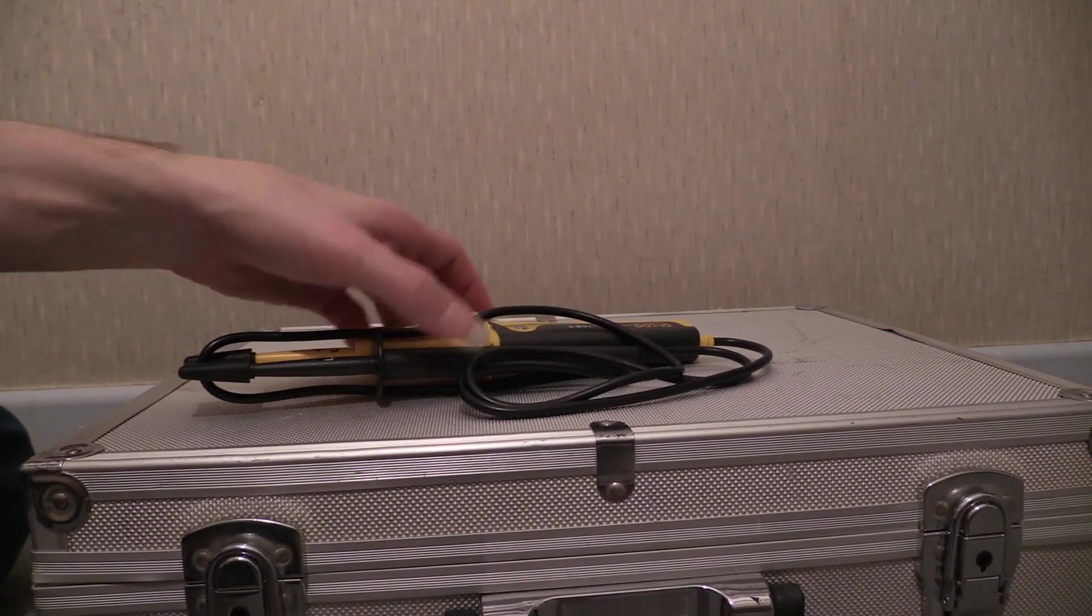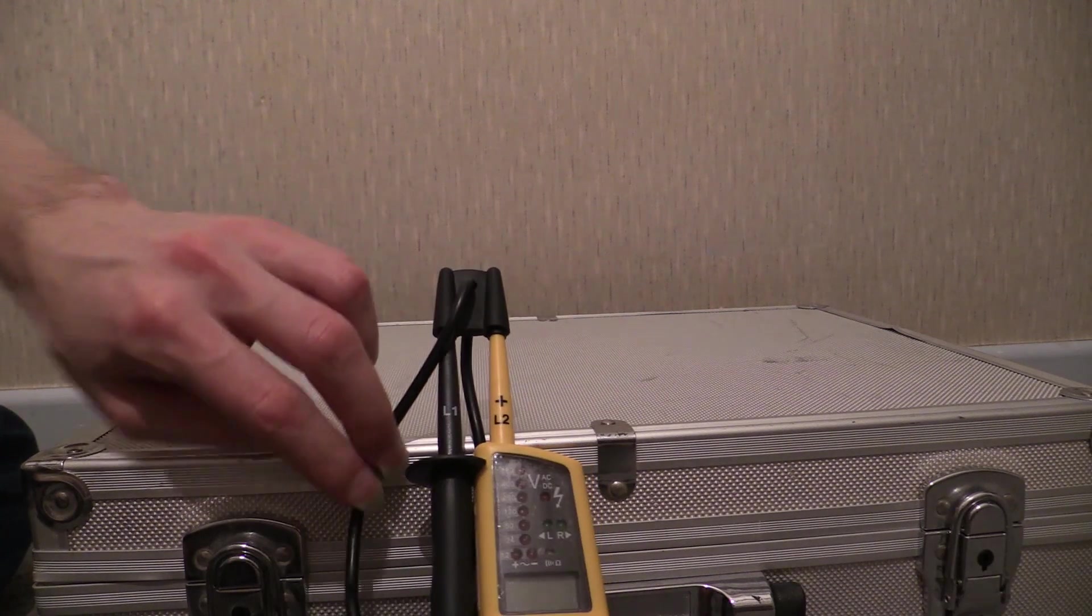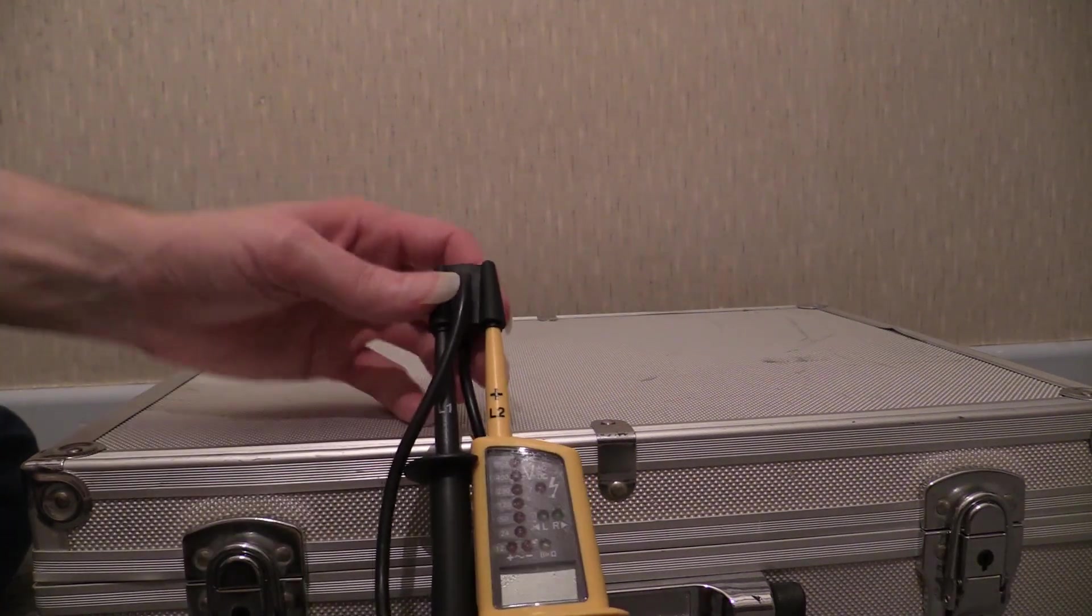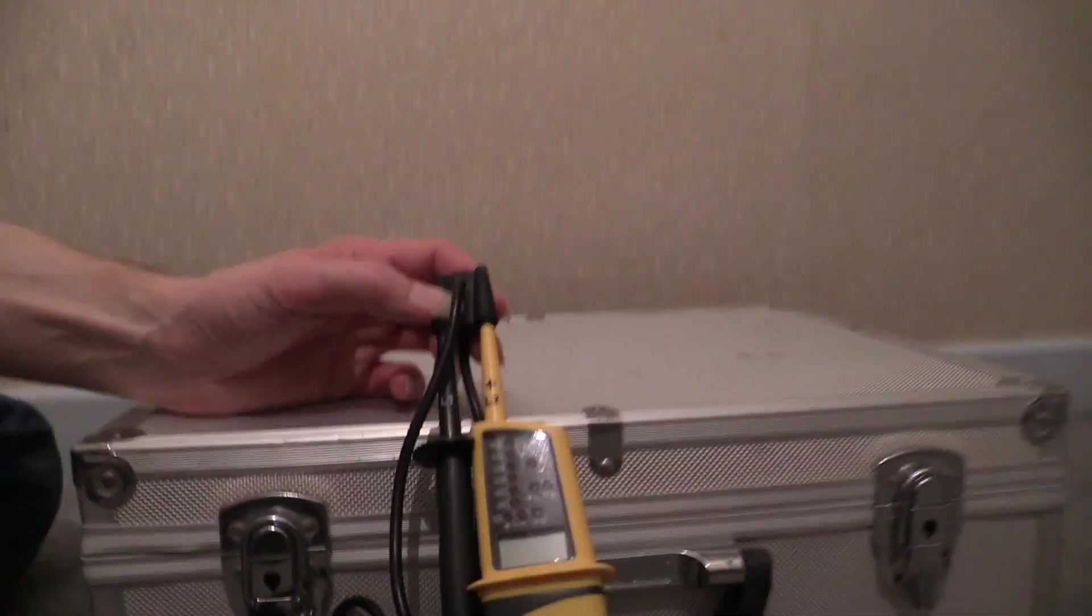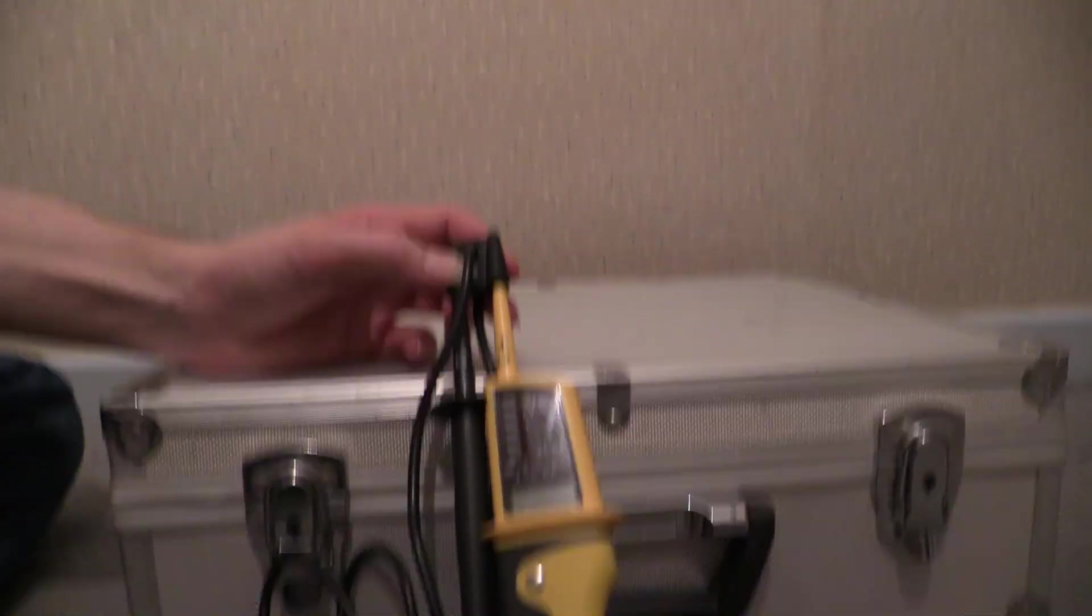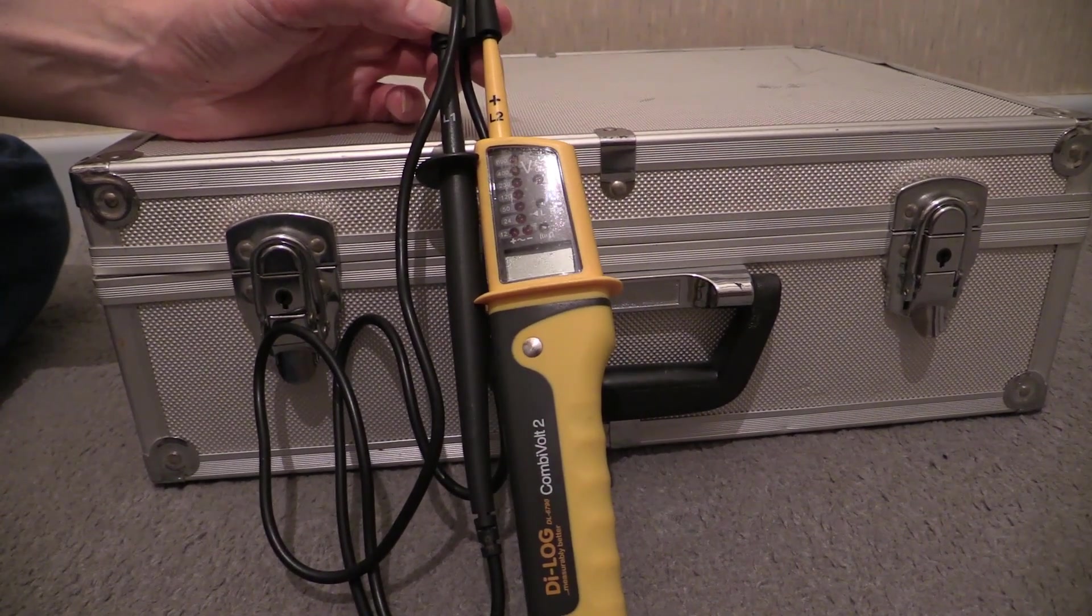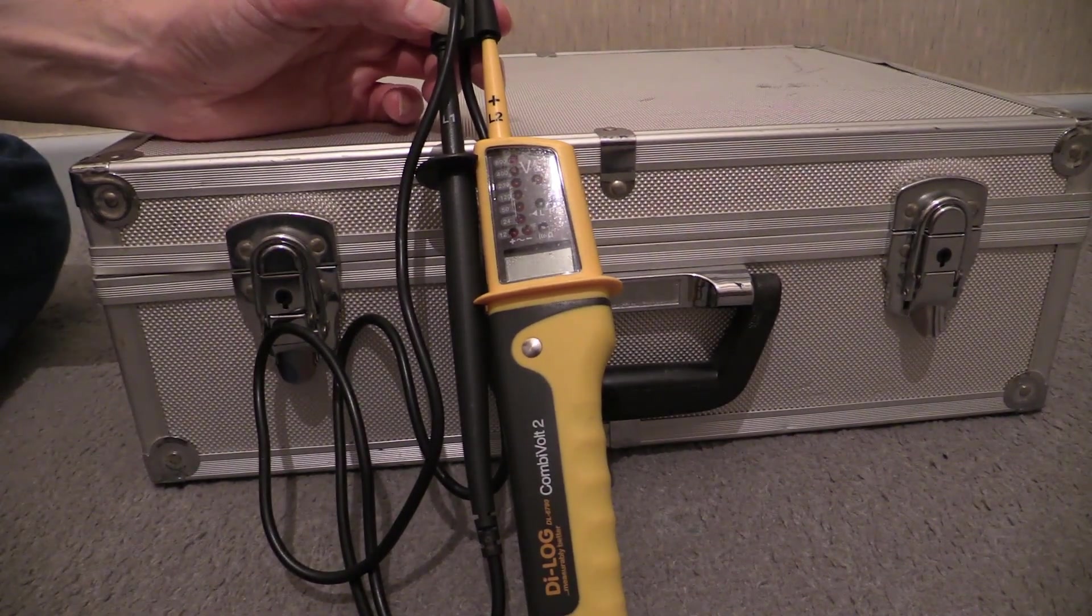It opens up and inside we have got this. Just chuck the case over the back of the test equipment case. So, what are we looking at then? Well, this device is called a CombiVolt 2.